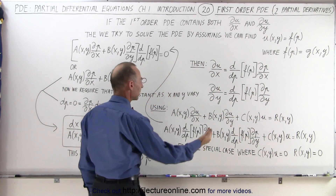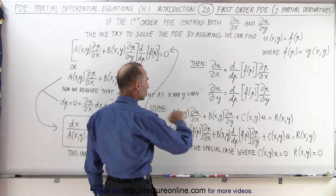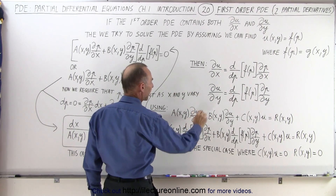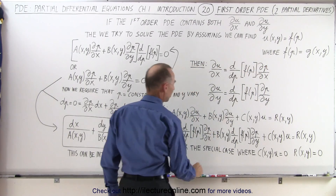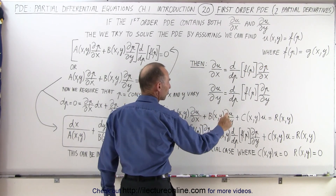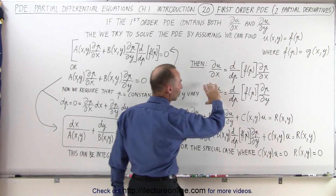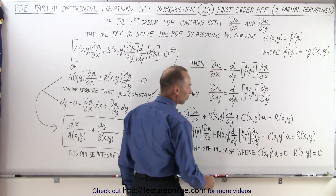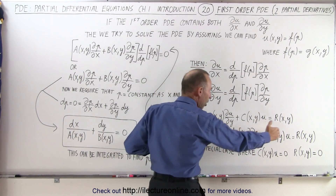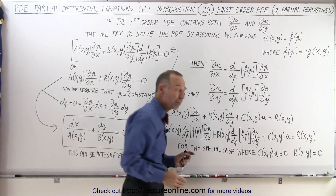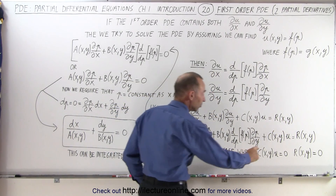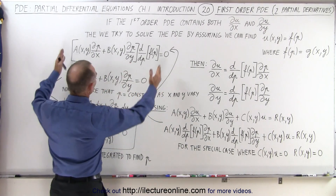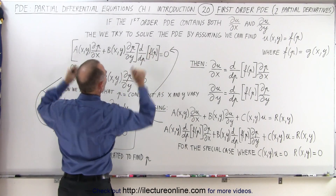We're now going to take that and plug it into our equation right here. So instead of writing the partial of U with respect to X we're going to write this expression, and instead of writing the partial of U with respect to Y we're going to write this expression, where the C and R terms go to zero. So instead of having this big long equation, which would be very difficult to solve, we set C and R equal to zero and therefore we end up with a special case that looks like this.